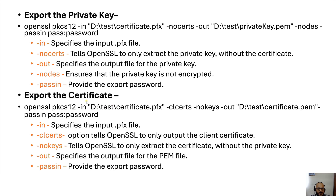Similarly, if you want to export only the certificate and not the private key, you run the same command but with two changes: use -clcerts instead of -nocerts, and add -nokeys so we don't export any private key. The -clcerts option tells OpenSSL to only output the client certificate. This way you can separately export a private key or a certificate.